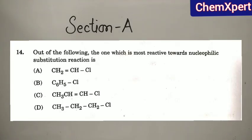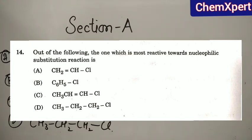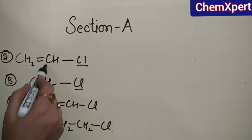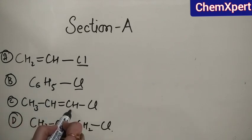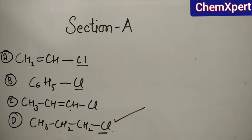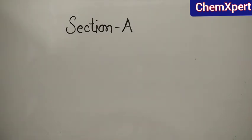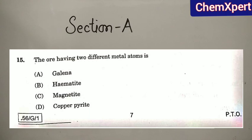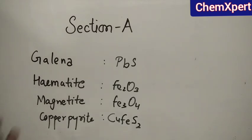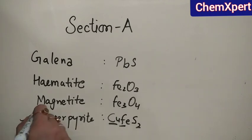Question 14: out of the given options, identify the compound most reactive towards nucleophilic substitution. In the first three cases, Cl is attached to an sp²-hybridized carbon, making that bond very difficult to break. Therefore, option D is the most reactive towards nucleophilic substitution. Question 15: the ore having two different metal atoms — options are Galena, Hematite, Magnetite, and Copper Pyrite. Copper Pyrite contains two metals — copper and iron — so the answer is Copper Pyrite.